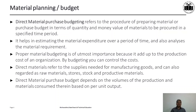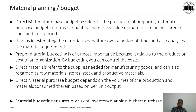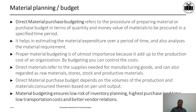Consider you are producing a fridge, TV, or washing machine. You have to decide how much material of different types will go into the production of a single washing machine, TV, or fridge. Material budgeting ensures low risk of inventory planning.